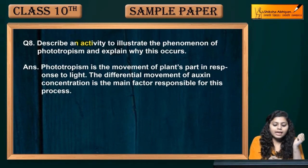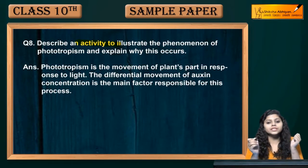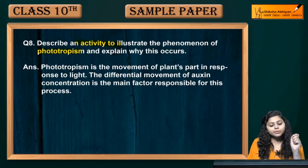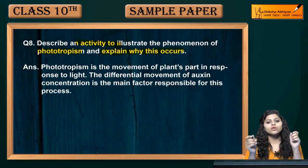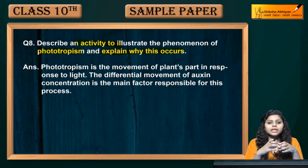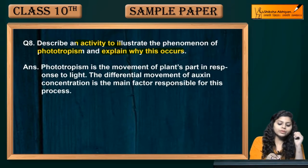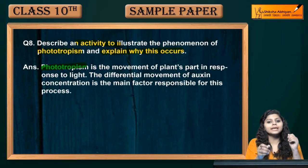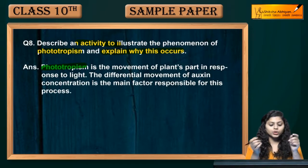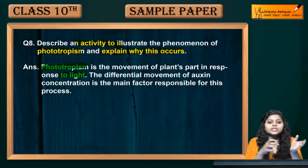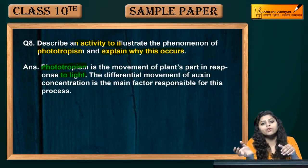Q8. Describe an activity to illustrate the phenomena of phototropism and explain why they occur. Phototropism is the movement of the plant towards light. In response to light, it can be towards or away from the light.